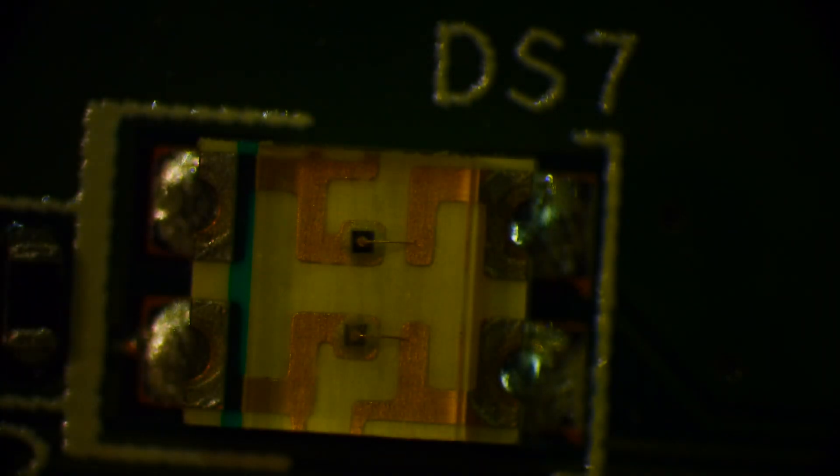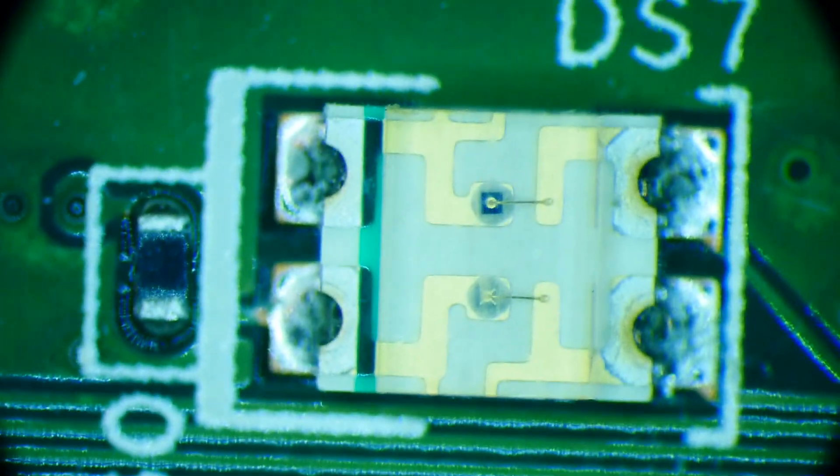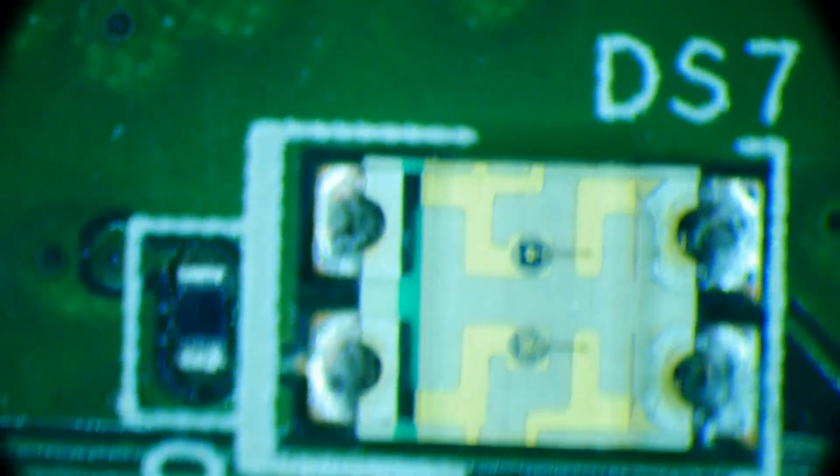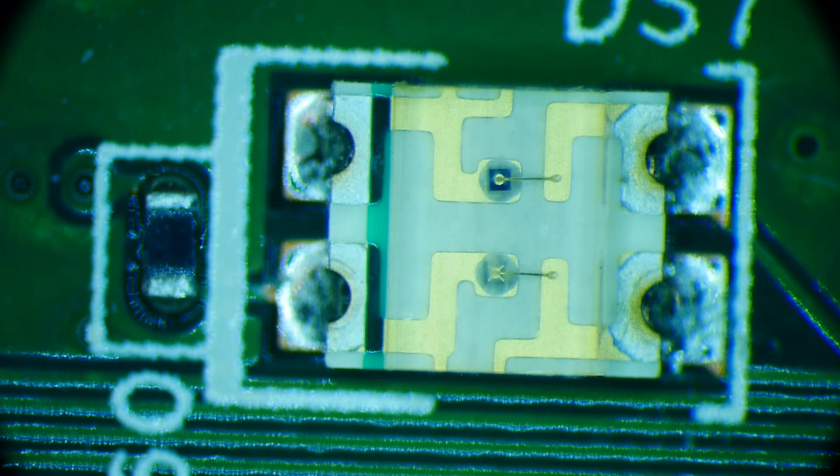The reason they're different is they are made from different materials. Red ones, yellow ones, and sometimes green ones are made out of gallium phosphide or gallium aluminum arsenic, something like that. Nasty things.